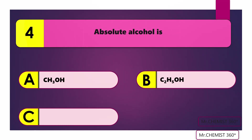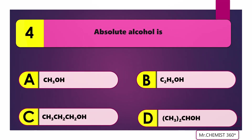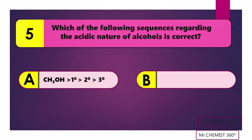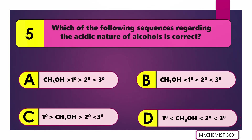Question 4: Absolute alcohol is? Answer: Ethyl alcohol. Question 5: Which of the following sequence regarding the acidic nature of alcohols is correct? Answer: Methyl alcohol greater than primary alcohol greater than secondary alcohol greater than tertiary alcohol.